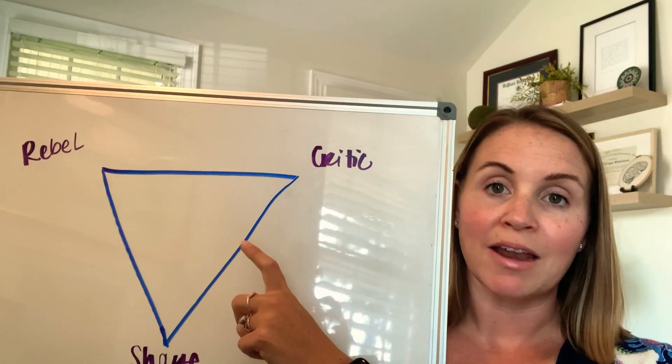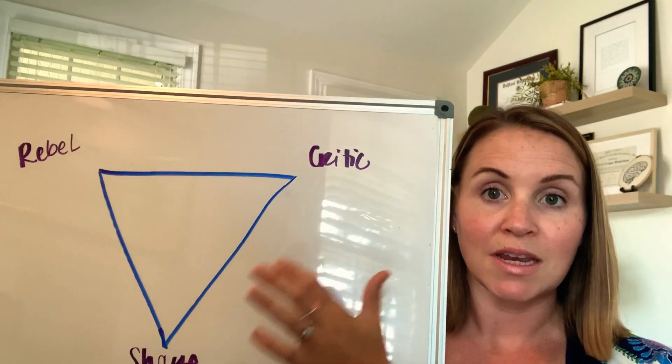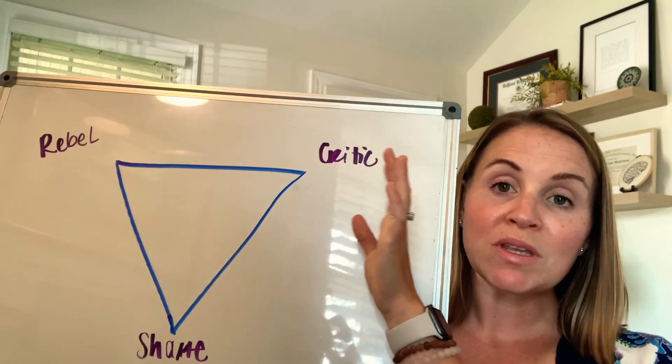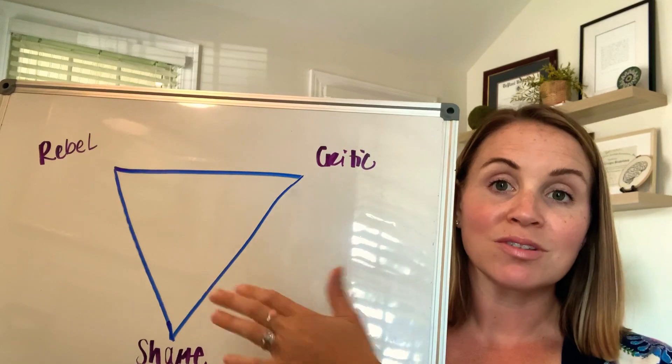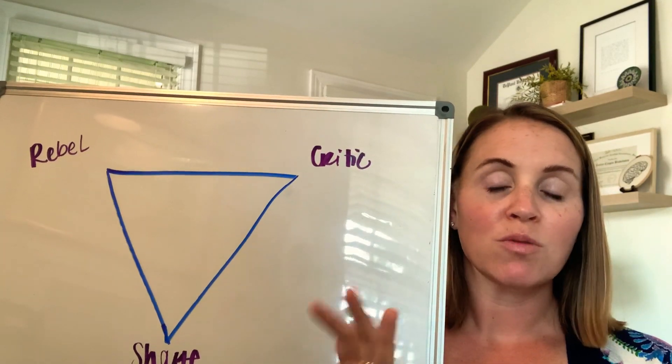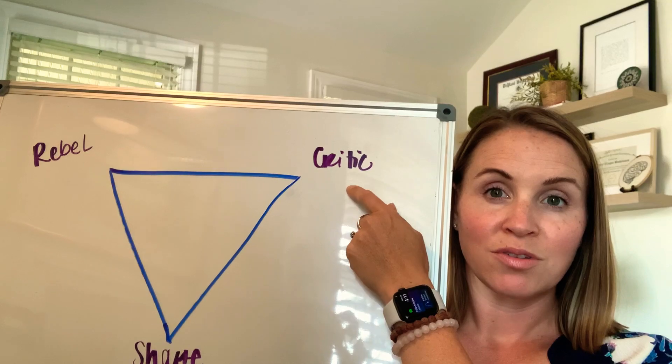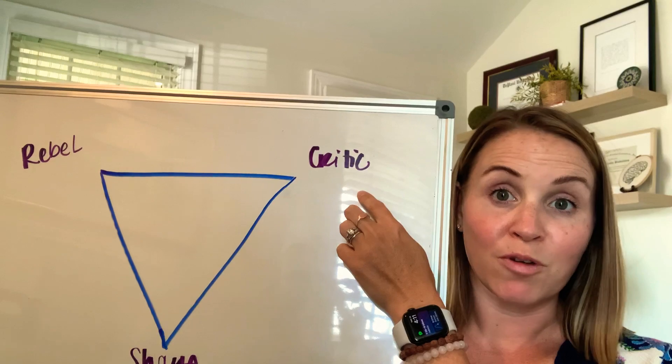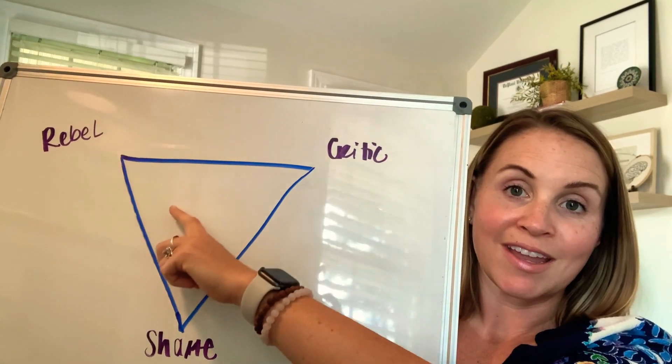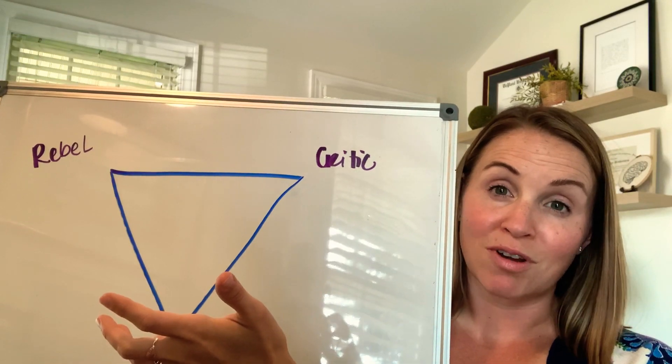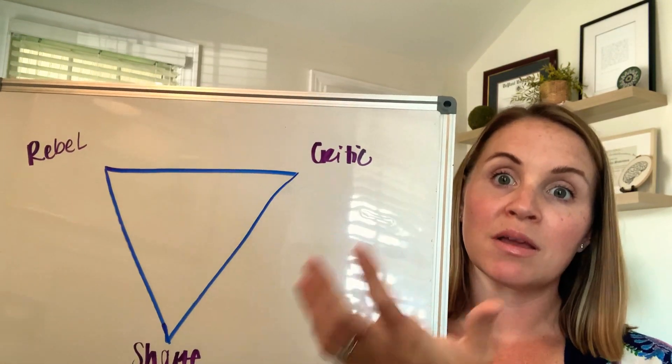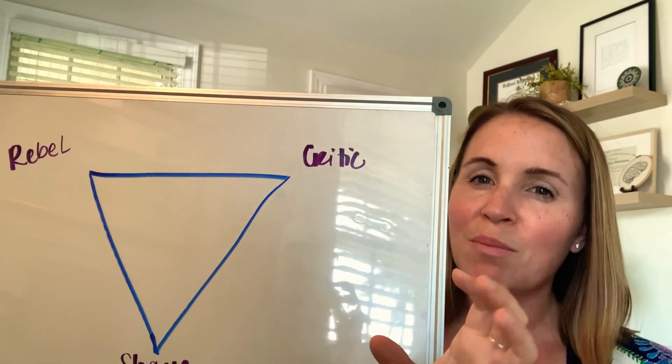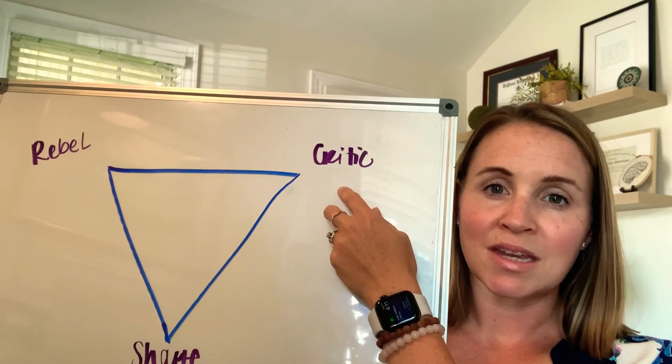But what the rebel is helpful at is that at least it's alleviating the pressure because the critic is going to burst at some point. And so when we start to see some rebel behavior, it's actually helpful because it says, okay, you identify that this is unsustainable. You're seeing a crack in the system that this actually isn't helpful for you. Now we have to try and catch the rebel before it becomes super destructive. But when someone presents themselves with some rebel type behaviors, it's like, okay, all right, here's something to work with because there's some type of awareness here that this can't sustain itself.